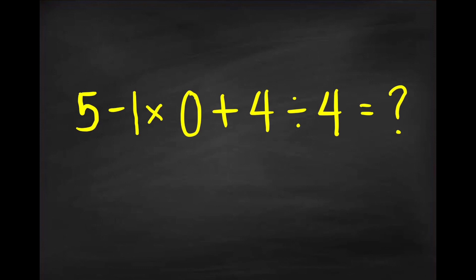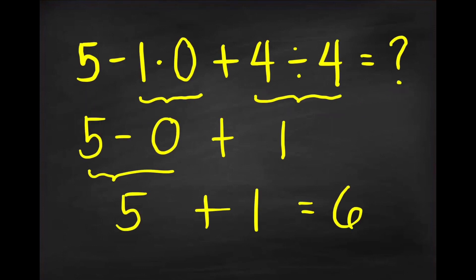If you know the correct order of operations then this is a very basic problem for you. And what is the answer? It is equal to 6. So here we perform first the multiplication followed by division, and then we perform the subtraction and addition from left to right. So 5 minus 0 is 5 and then 5 plus 1 is equal to 6.